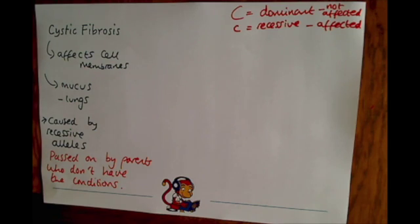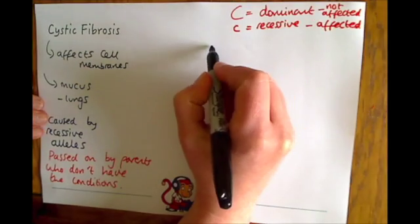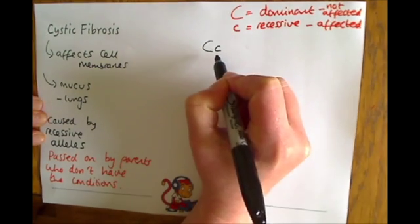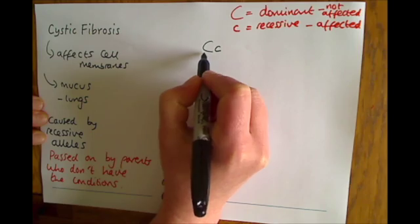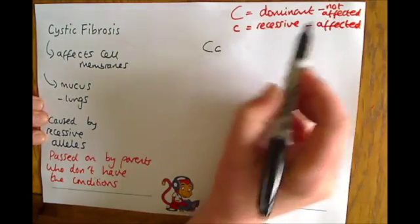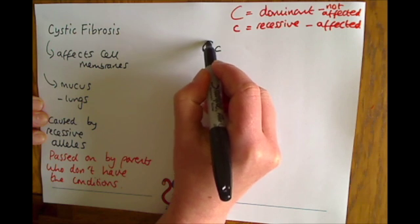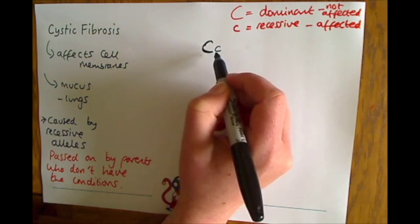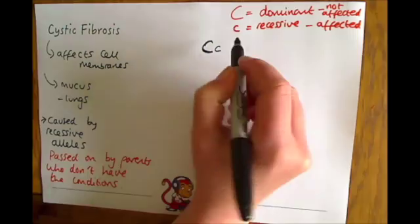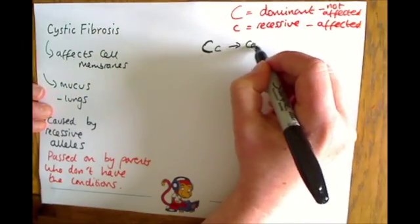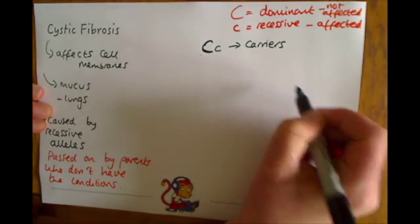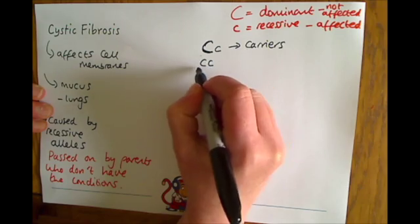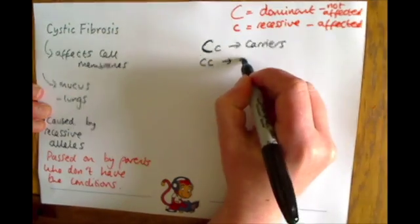Parents can both be carriers if they have the alleles capital C, lowercase c. Because the capital C is dominant, they are not affected. So if a parent has one dominant allele and one recessive allele, they can be carriers without actually having the condition themselves. It's only when a person has cc, both lowercase, that they are then affected.